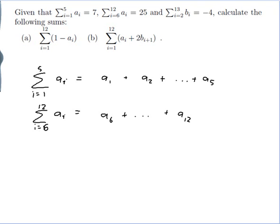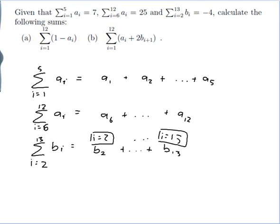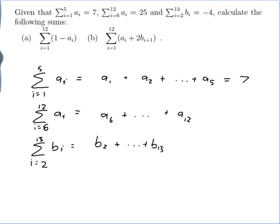And the sum from i equals 2 to 13 of bi, so i equals 2 all the way up to i equals 13. That would be bi when i equals 2, so b2, up to bi when i equals 13, so b13, and that's that sum. The sum of ai from 1 to 5 is 7, the sum of ai from 6 to 12 is 25,